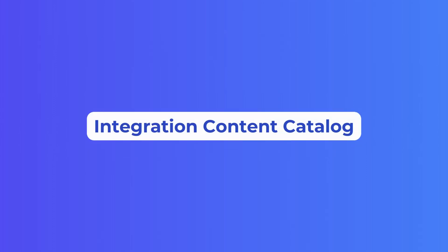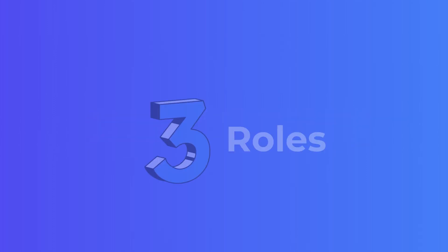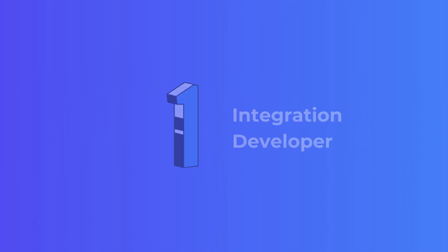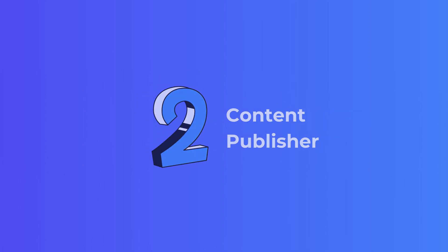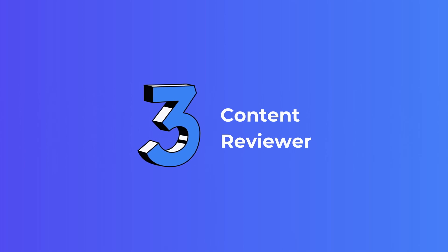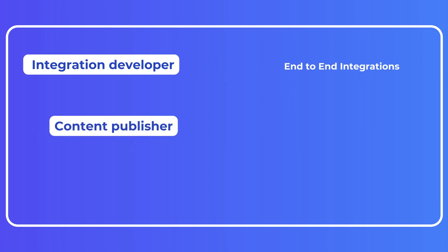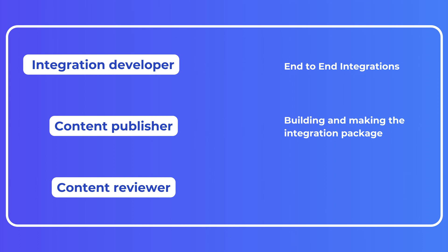When you are working with the integration catalog, you need to remember three different roles. One is Integration Developer, Content Publisher, and Content Reviewer. As an integration developer, you try to use the integration content to build end-to-end integrations. Content Publisher actually creates integration content and publishes it into the integration catalog. Content Reviewer is a person who reviews the quality of the integration content.